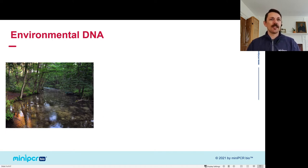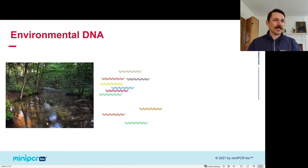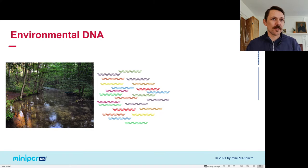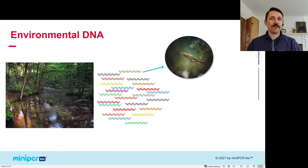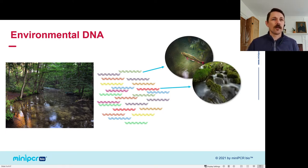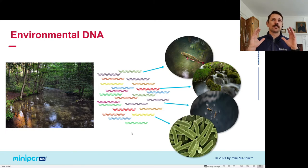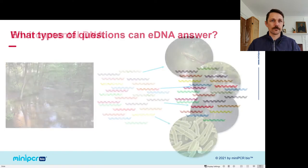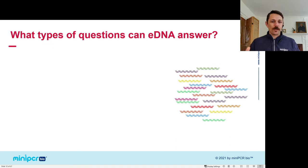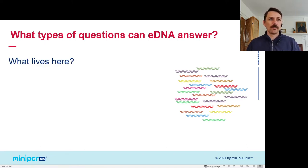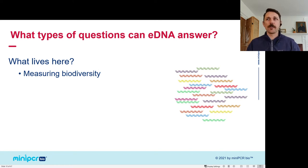With environmental DNA, instead of going to the organism to get the DNA, you do the opposite: you go to a place, get the DNA, and then find out what organism it came from. You filter the river or extract DNA from mud or soil, and from that you can learn what fish lived there, what bacteria and microbes are in the environment. eDNA has really opened up questions that can be answered much more easily. The most basic question folks ask is: what lives here? It's great for measuring biodiversity.